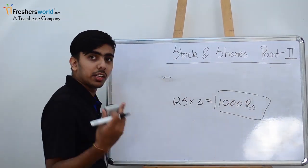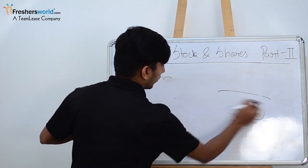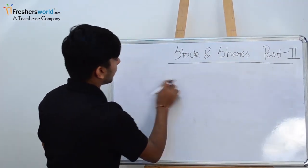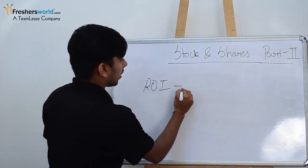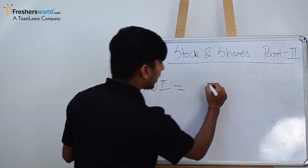The second is ROI—the return on investment we have to find. For ROI there is a formula: dividend earning divided by total investment into 100.